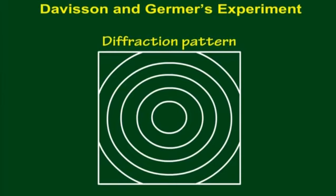Since X-rays have wave character, therefore the electrons must also have wave character associated with them. Moreover, the wavelength of the electrons as determined by the diffraction experiments were found to be in agreement with the values calculated from the de Broglie equation.